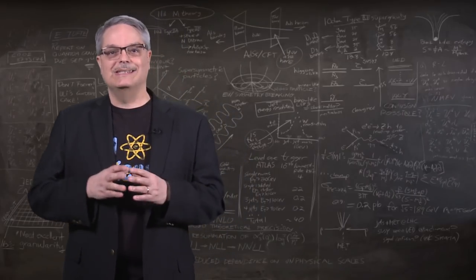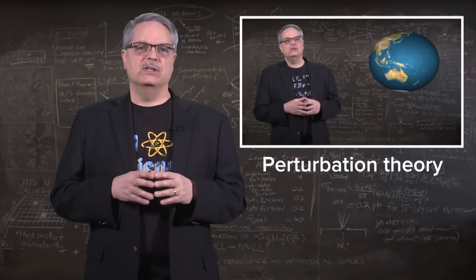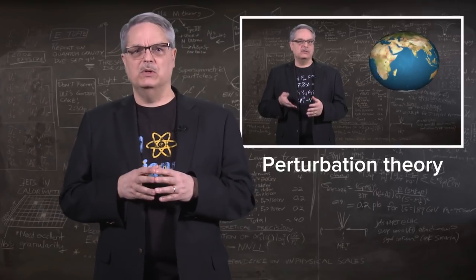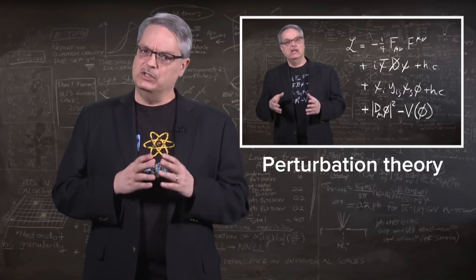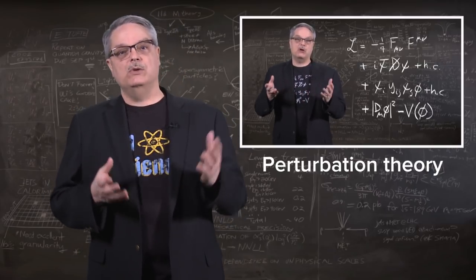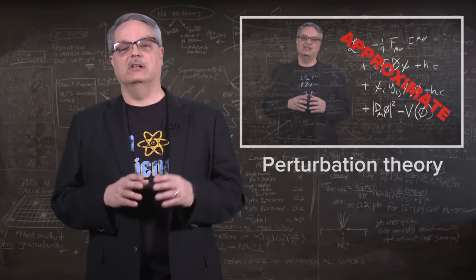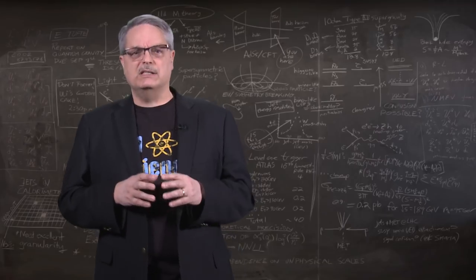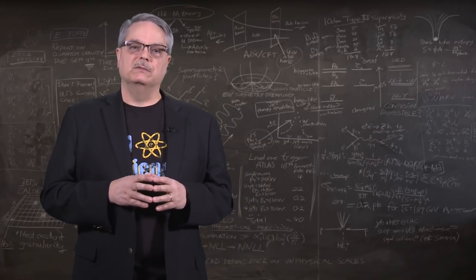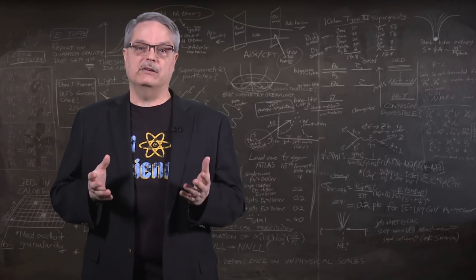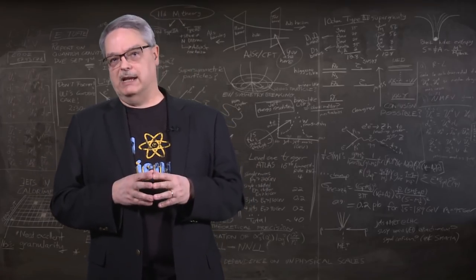The first is an idea called perturbation theory. I made a video that talked about that in detail and it would help you if you watched it. But the basic idea is that if you are confronted with an equation that is too difficult to solve, you replace it with an approximate equation that is easier to solve. As long as the correct and approximate equations are similar, you will get a reasonably correct answer. And if you need a more accurate calculation, you just use a more accurate approximation.